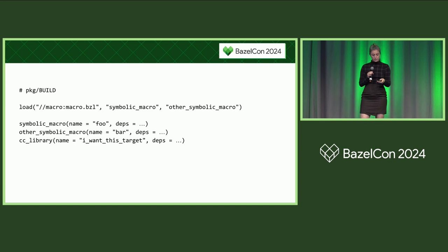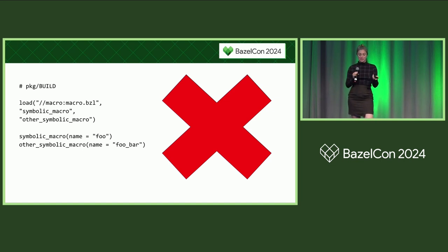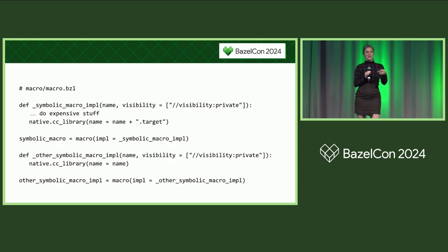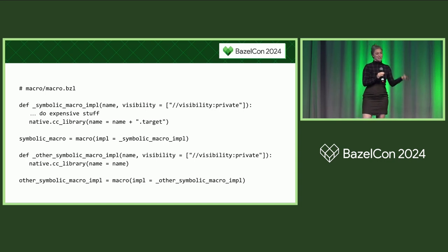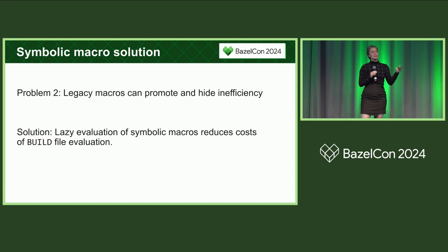Going back to the naming schema: imagine you request target foo_bar. Either of two macros could have created foo_bar, which is detrimental to laziness — Bazel would first need to evaluate symbolic macro foo, do the expensive computation, only to find it didn't create foo_bar, and then go evaluate macro foo_bar, which did. If you follow this naming schema and exclusively name macros so they don't interfere with each other's namespaces, then lazy evaluation will reduce the costs of build file evaluation.